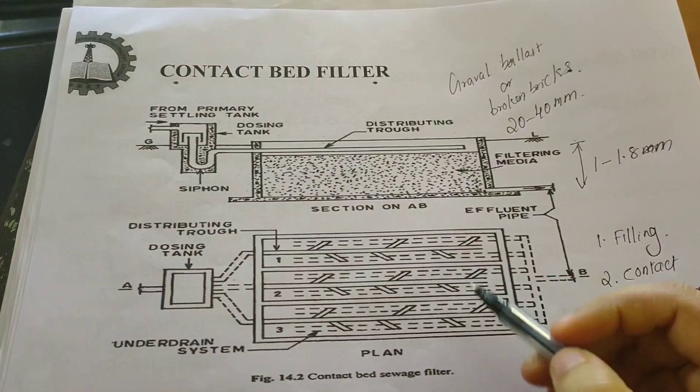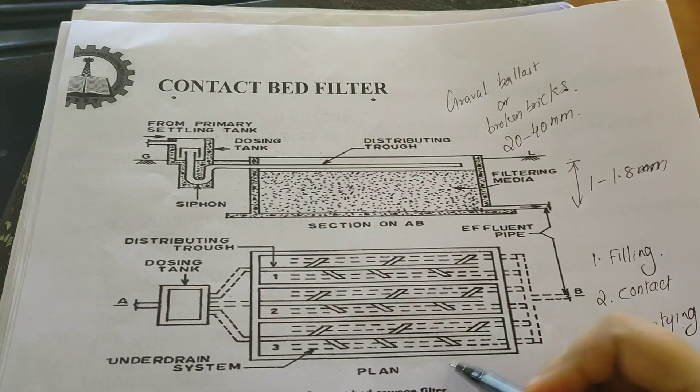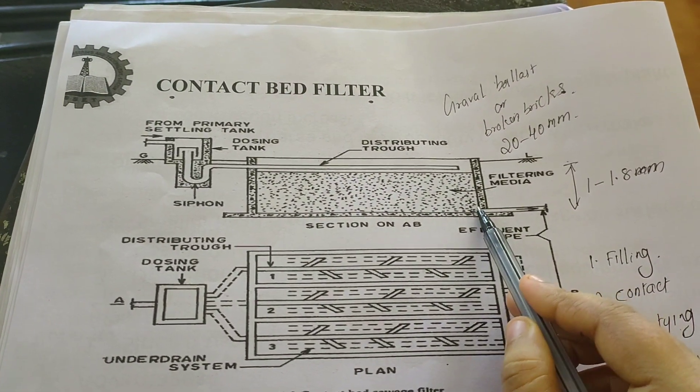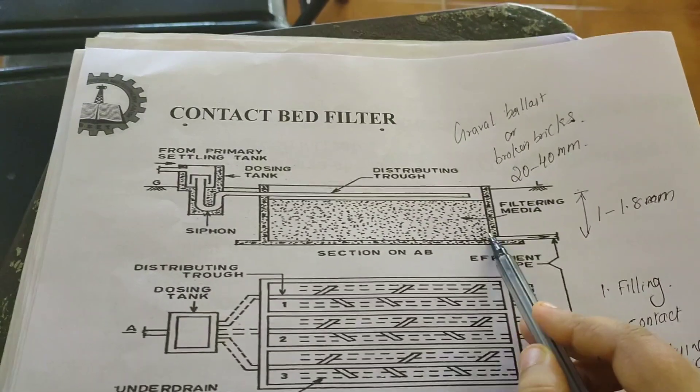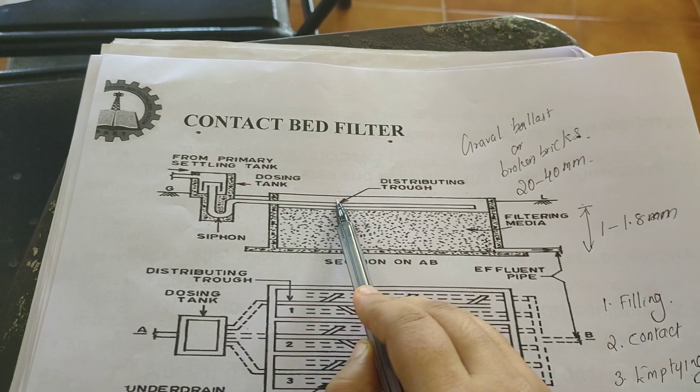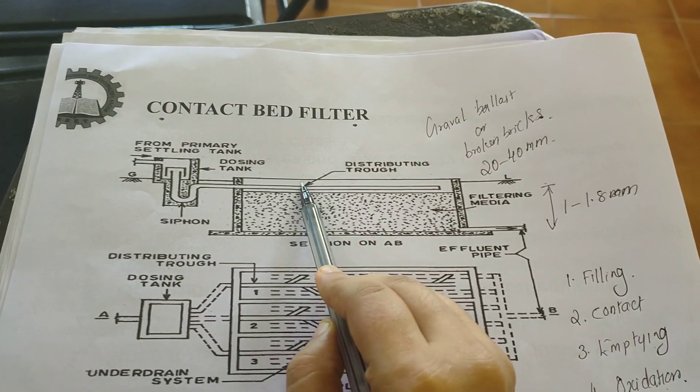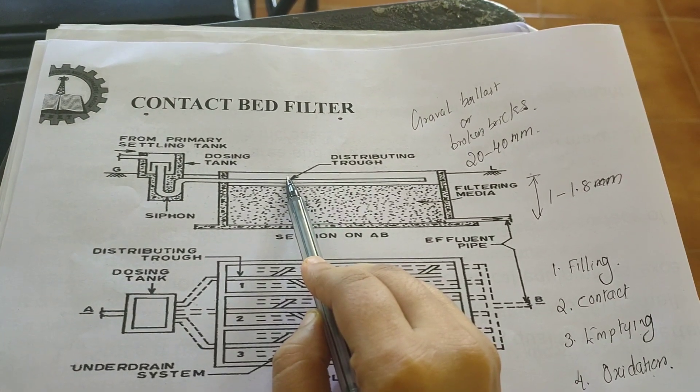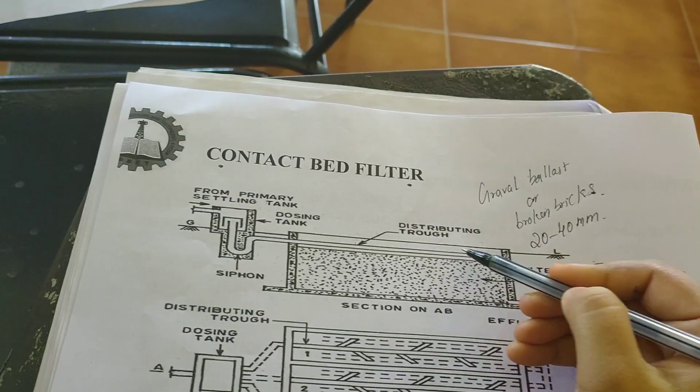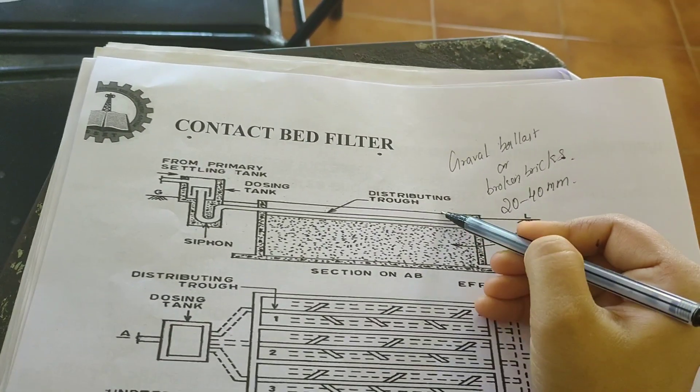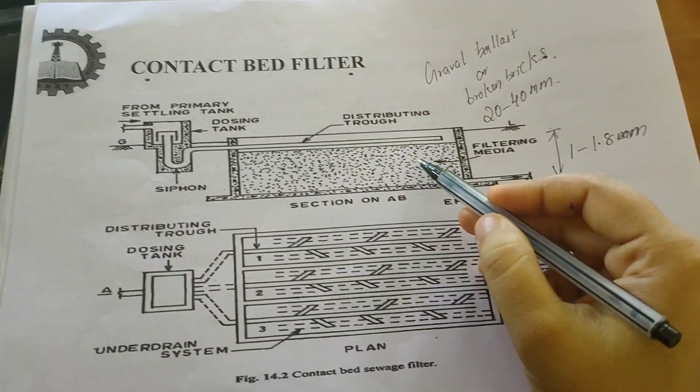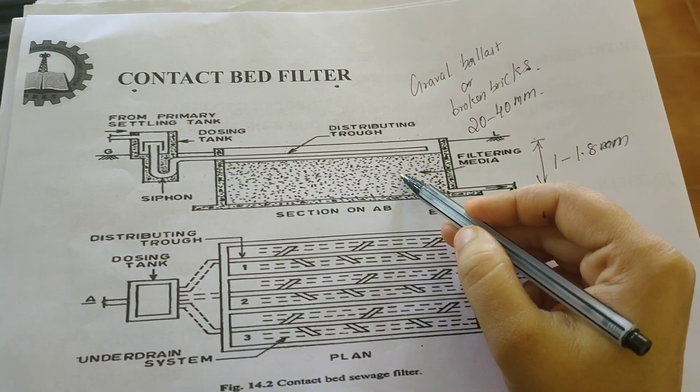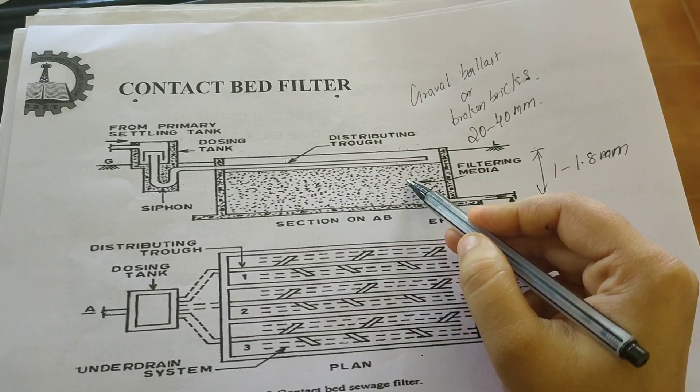At first, the outlet valve of this particular tank or filter remains closed and sewage is admitted through the dosing tank. The depth of effluent tank will be about 5 to 10 cm over the top of the bed. For filling, it takes about 1 to 2 hours.